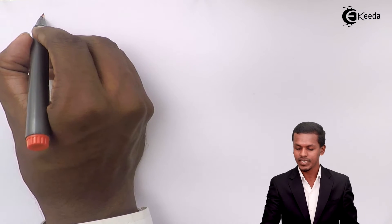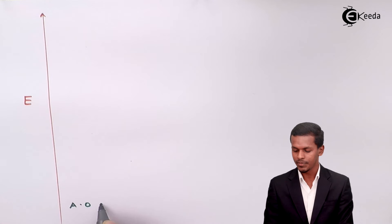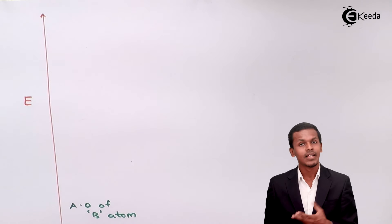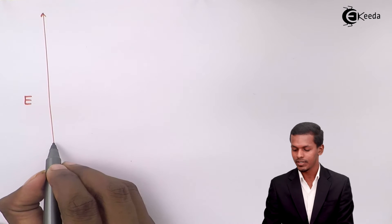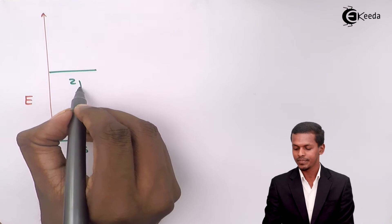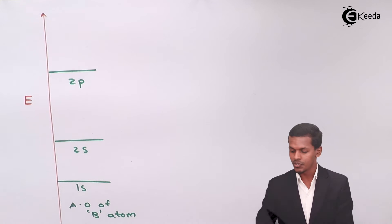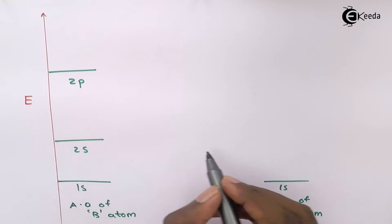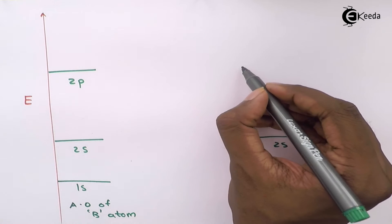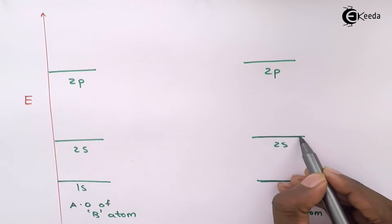The atomic orbitals represent energy levels. Since we are talking about the atomic orbital of the boron atom, it will have basically three levels: one for 1s, the next for 2s, and lastly for 2p. Similarly, the atomic orbital of the second boron atom will have the same energy levels for 2s and 2p.